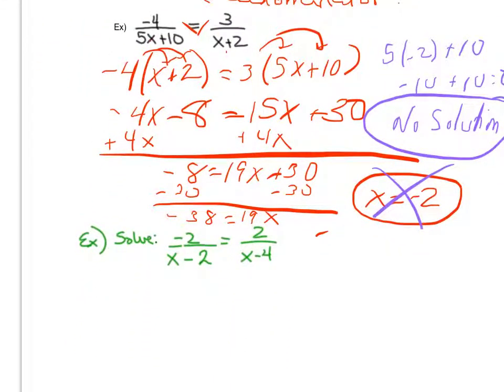Looking at the second example, I'm going to go through the same steps. I'll start by cross-multiplying. Once again, I'm going to recognize that x minus 2 needs to be grouped together, and as does x minus 4. Giving me negative 2 times x minus 4 equals 2 times x minus 2.